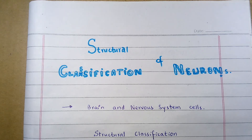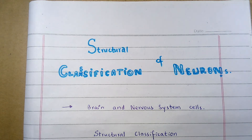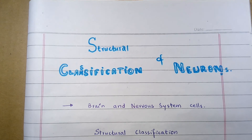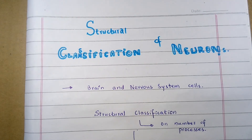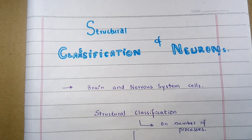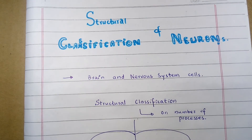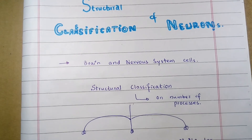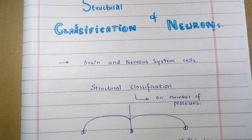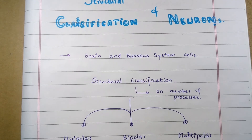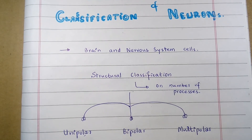Just from looking down a microscope it becomes clear that all neurons are not the same, so the structural classification of the neuron can be made. The structural classification of the neuron is based upon the number of processes that project out from the cell body. On this basis there are three major groups of neurons: unipolar, bipolar, and multipolar.